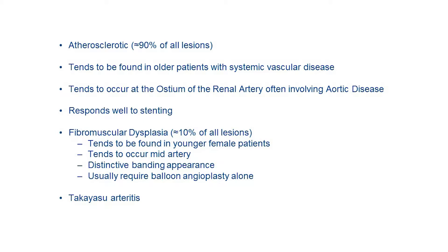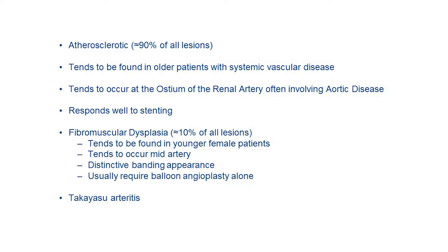The types of renal artery stenosis are based on the underlying etiology. The most common one encountered in our community is atherosclerosis, which is responsible for almost 90% of identified renal artery stenoses. This condition tends to be found in older patients with a high burden of atherosclerosis in the aorta, which quite often spills into the renal arteries and affects the origin of those arteries.